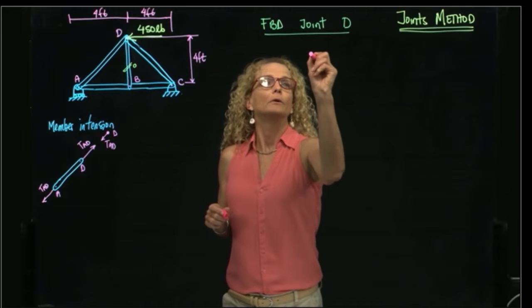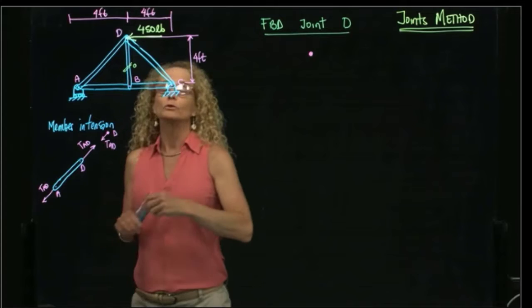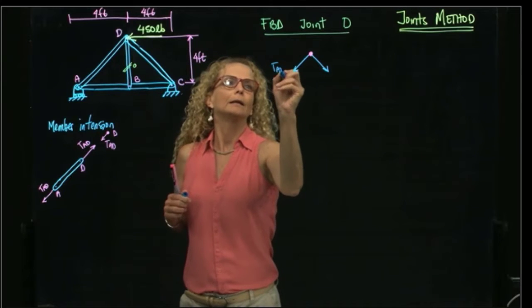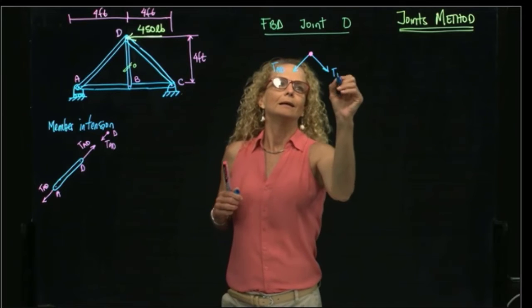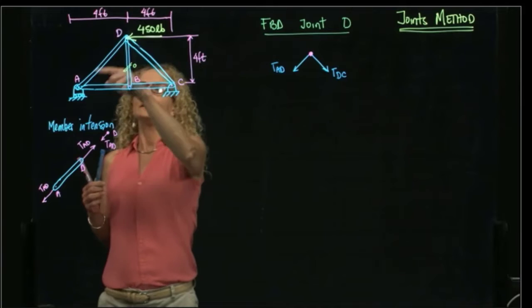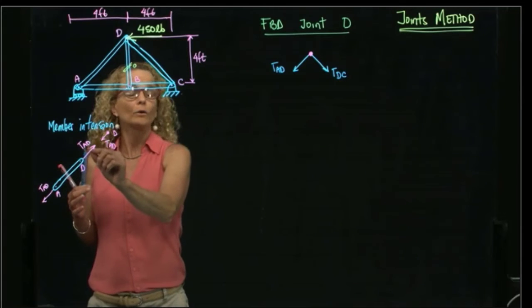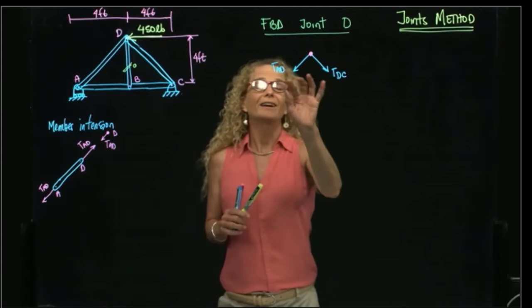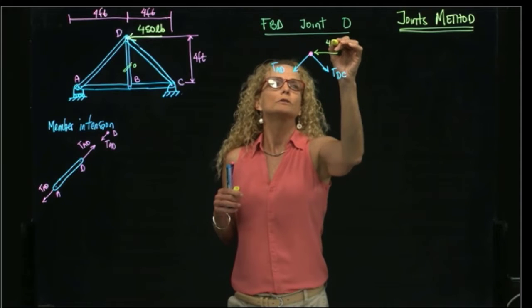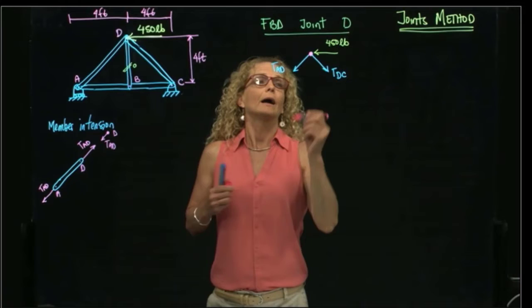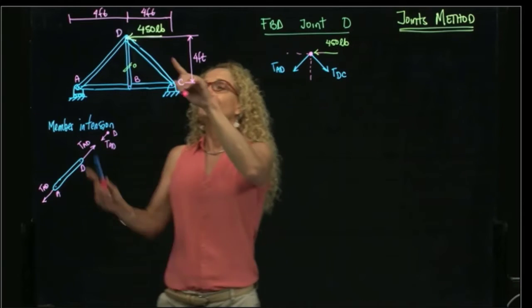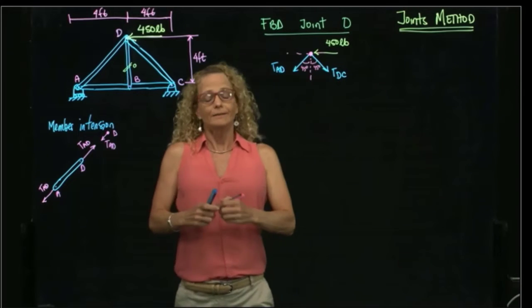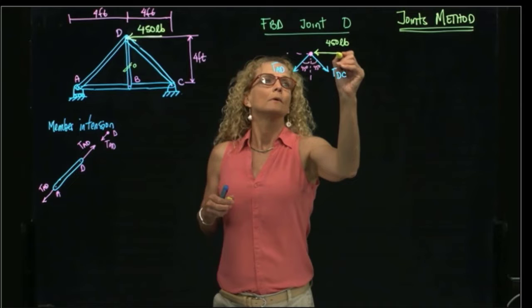So my joint D, and as I said, I will draw the forces going out of my pin. This will be reaction TAD. This will be reaction TDC. Do I call it DA or DC? As I said, they are going to be the same in both sides, so I can call it AD or DC. It doesn't matter. And then I have my active force, which is 450 pounds. And I need the angles. Since this is four feet and this is four feet, I know that this is 45 and this is 45. So that is my free body diagram of my joint D.